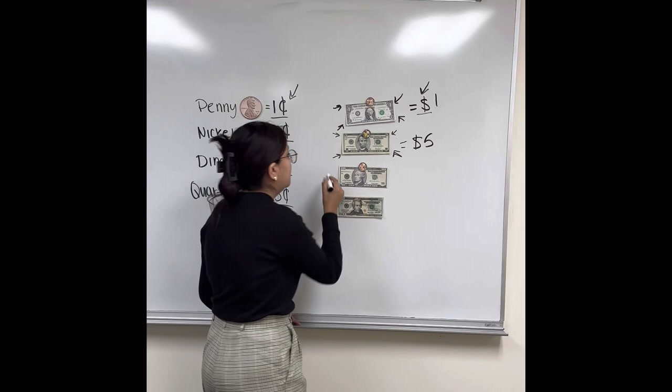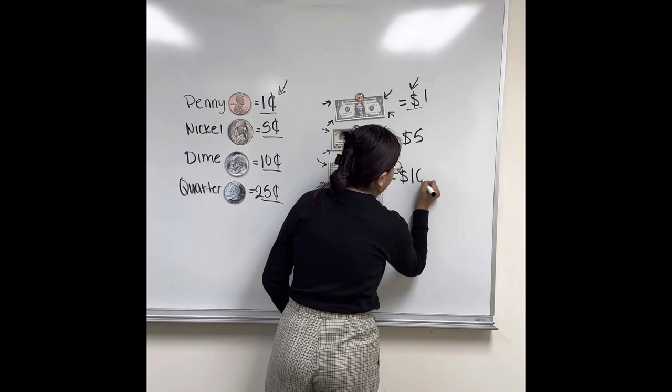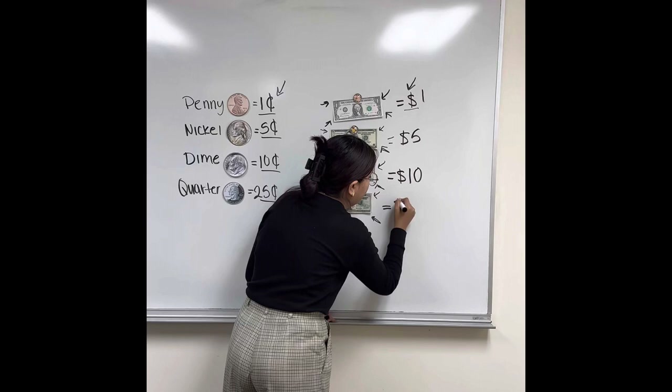Starting with the next one — what number do we see here? Ten. Good job. So this is going to be valued as? Ten dollars. Good job. And then the last one — what number do we see here? Twenty. Good job. And what sign are we going to use? The dollar sign. Good job. And it's valued as twenty.